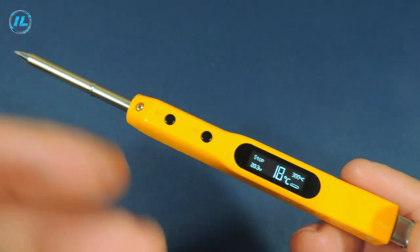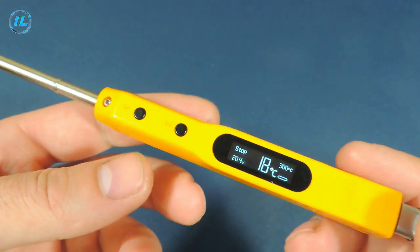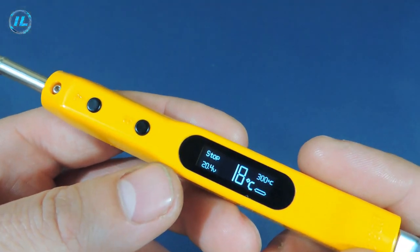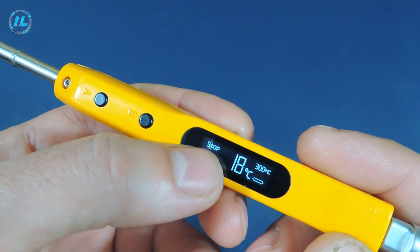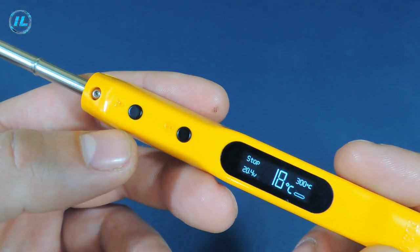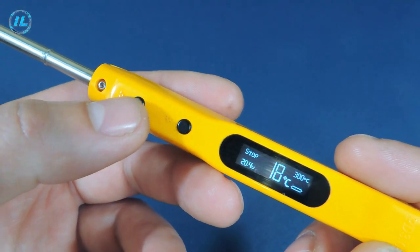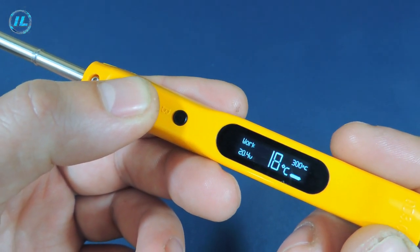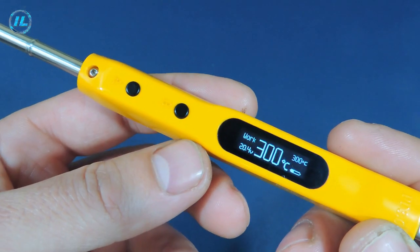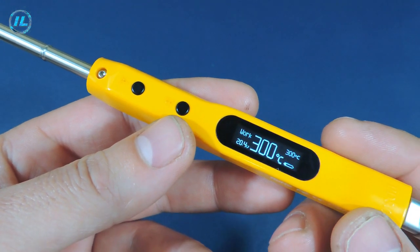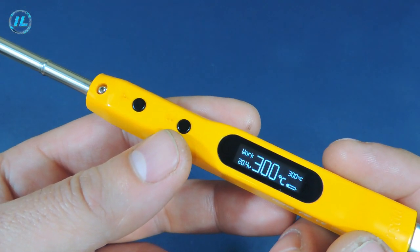When turned on, the soldering iron emits certain sounds. Now the soldering iron is turned off, as indicated by the inscription stop. To turn it on, you need to press and hold the button. In just 6-8 seconds, the soldering iron gained operating temperature.